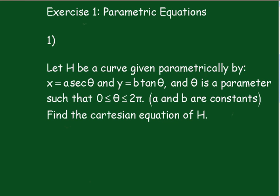Okay, now you might recognize the fact that you've got a sec and a tan. So we're going to use the identity that 1 plus tan squared theta equals sec squared theta. So clearly we'll need to square these ones.